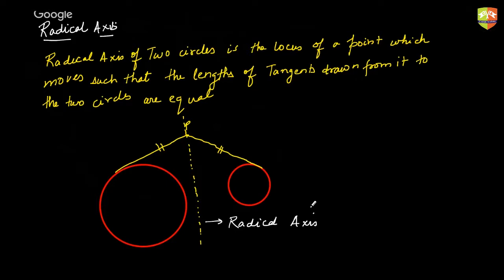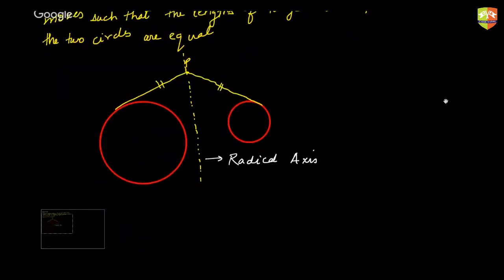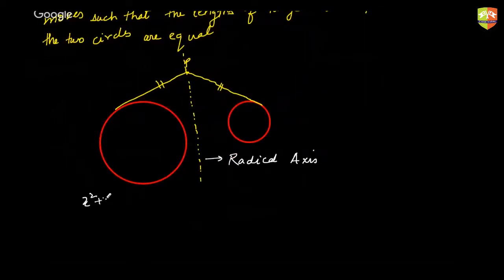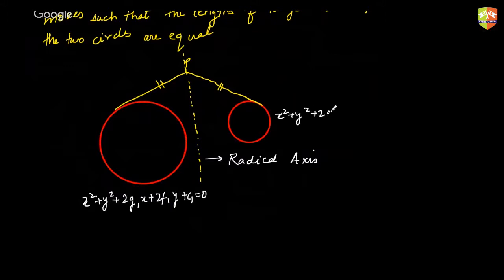Now let us derive the equation of this. It can come as a direct locus-based question. They may not use the word radical axis per se, but let's say the equation of this circle is x² + y² + 2g₁x + 2f₁y + c₁ = 0, and this circle is x² + y² + 2g₂x + 2f₂y + c₂ = 0.